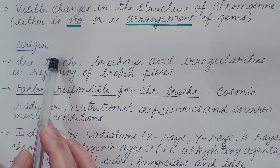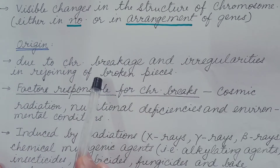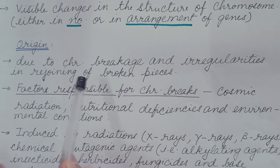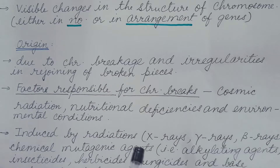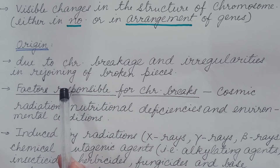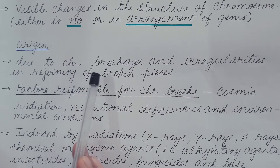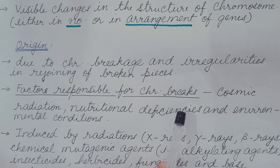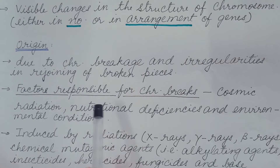The origin of chromosomal aberrations is due to breakage in chromosomes. These broken pieces then undergo rejoining, but there are irregularities in rejoining. Hence, they are not rejoined in the same way as in the normal chromosome, but in a different manner. This leads to a change in the structure of the chromosome, which is known as chromosomal aberration.